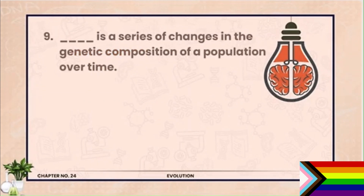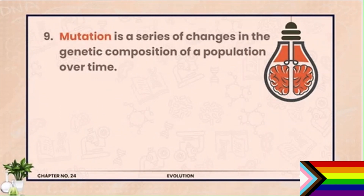Question 9. Mutation is a series of changes in the genetic composition of a population over time. Yarni ki vakt gozerne ke saath saath, uske genetic material me change aata hai. And that is mutation.